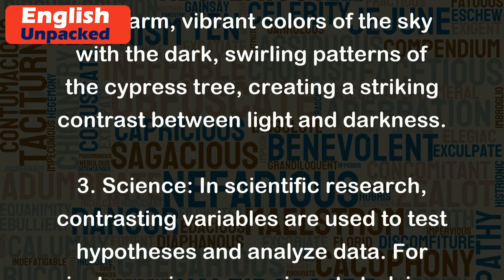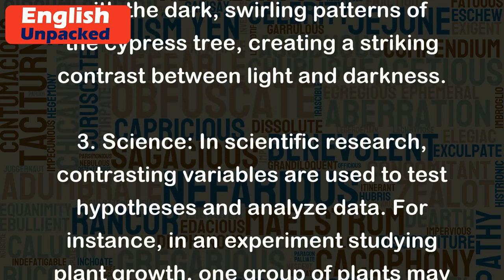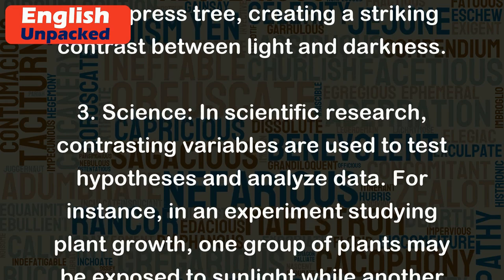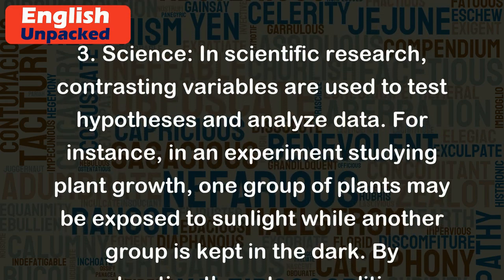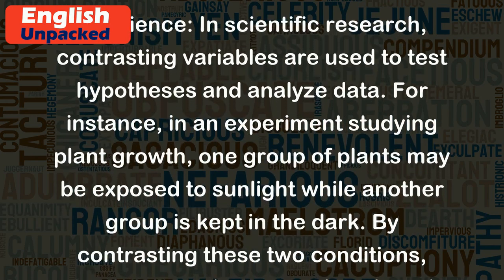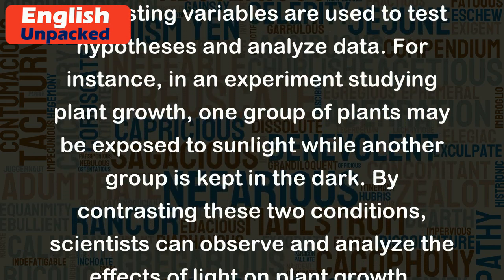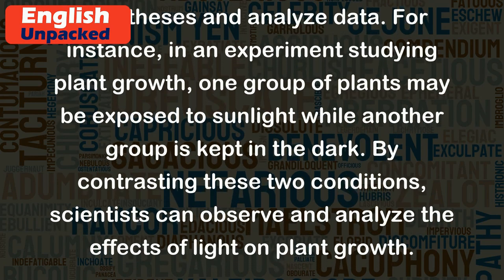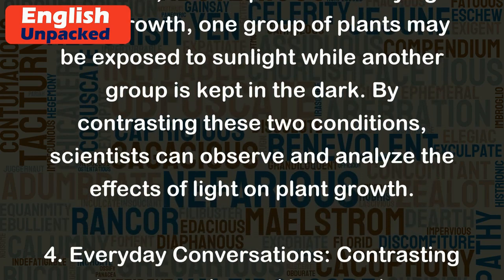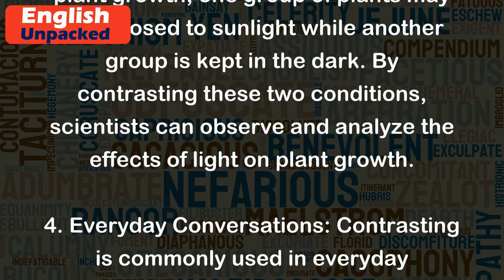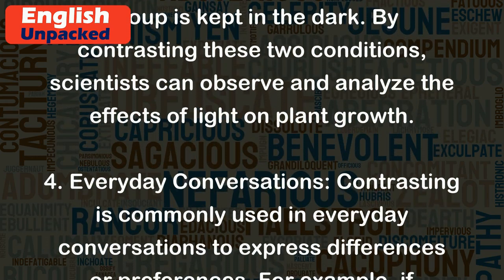Science: In scientific research, contrasting variables are used to test hypotheses and analyze data. For instance, in an experiment studying plant growth, one group of plants may be exposed to sunlight while another group is kept in the dark. By contrasting these two conditions, scientists can observe and analyze the effects of light on plant growth.